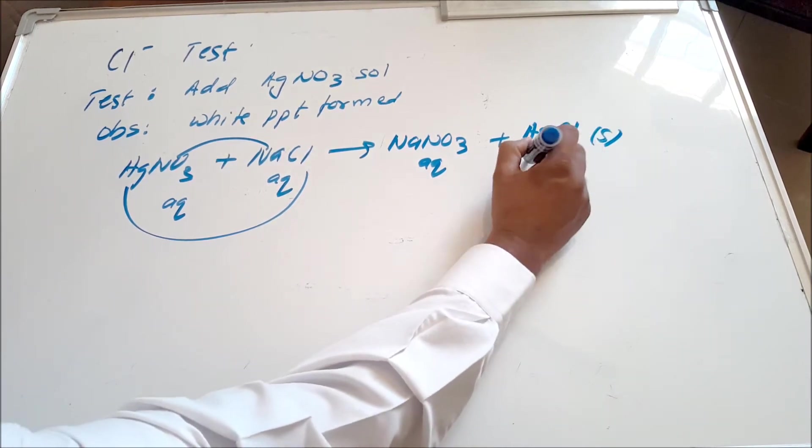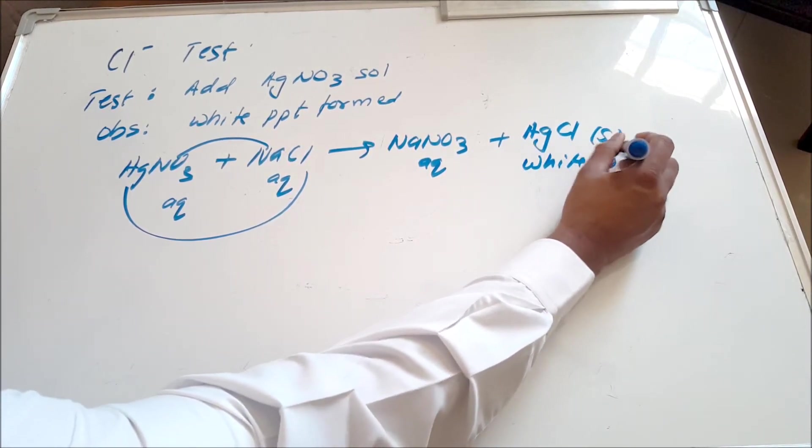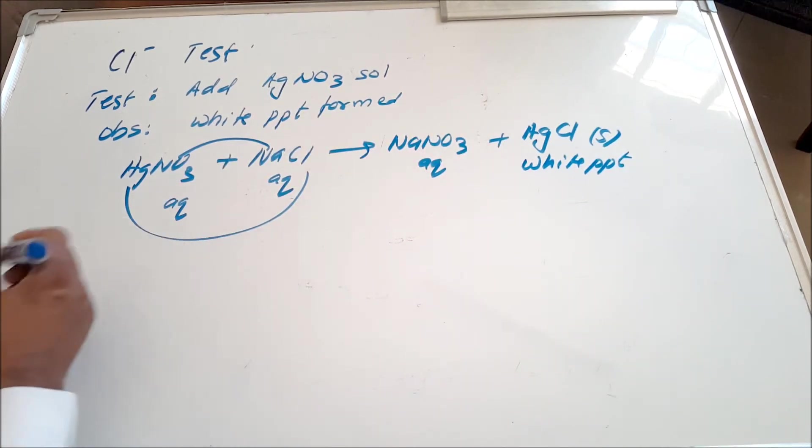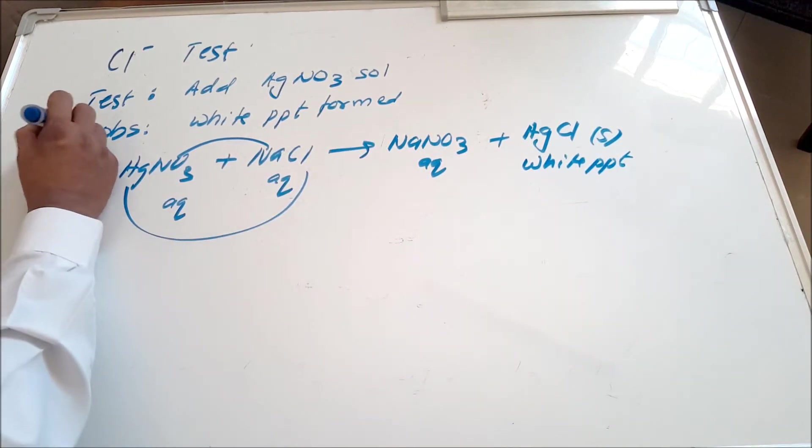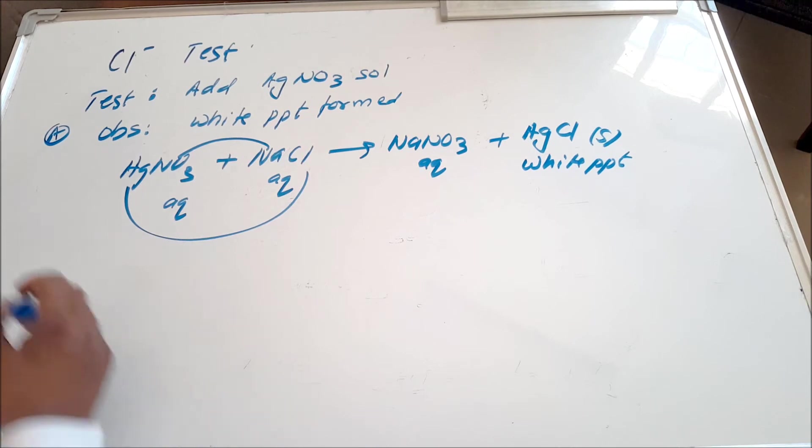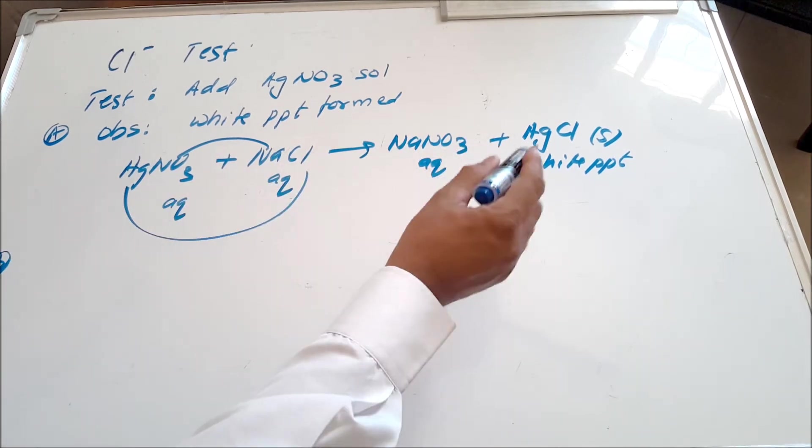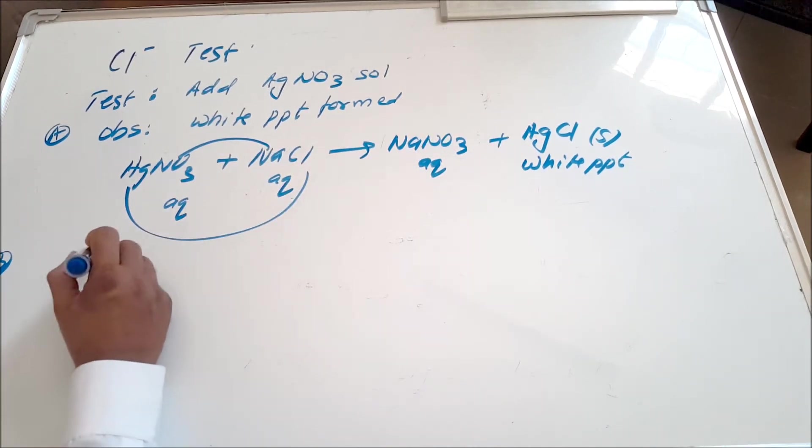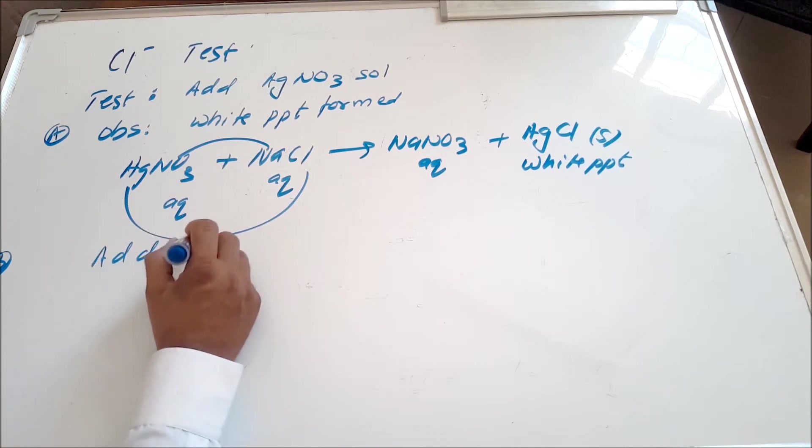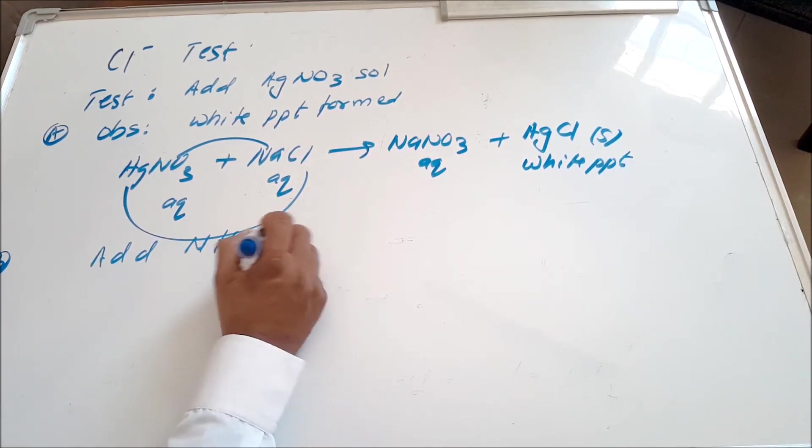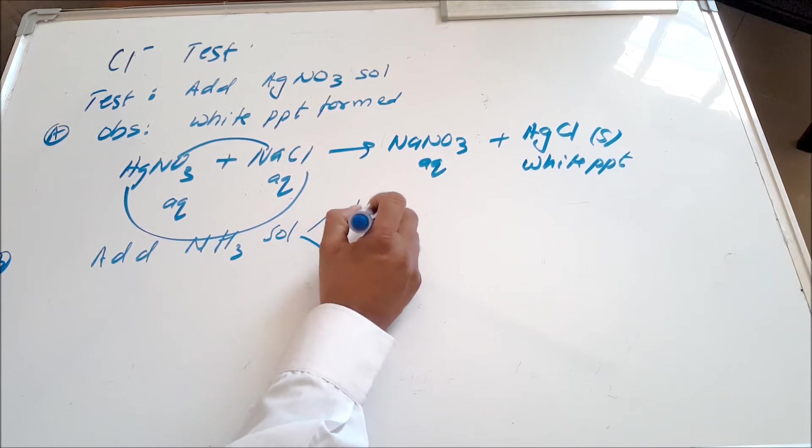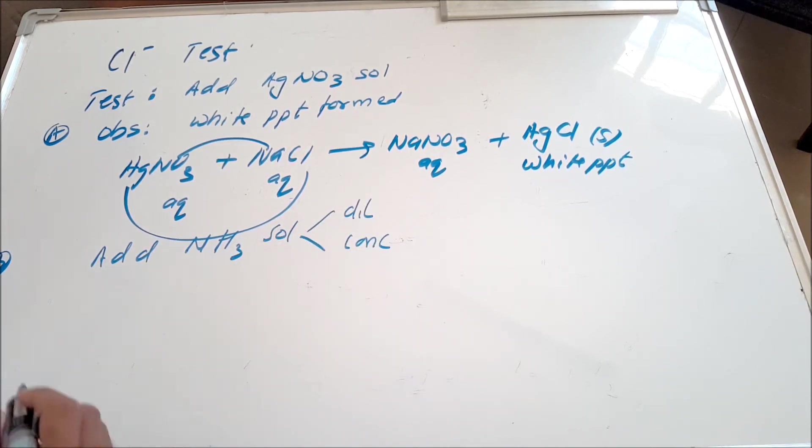Now there's a second part to this test. The first part is you add silver nitrate and you get the white precipitate. The second part is you take that white precipitate and add ammonia solution into it. Interestingly, when you add ammonia solution, there are two variations: there is dilute ammonia and there's concentrated ammonia.